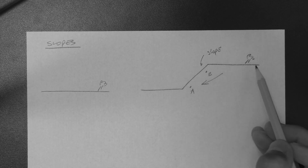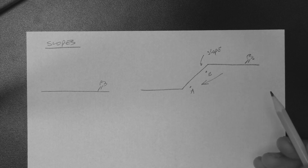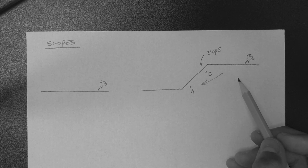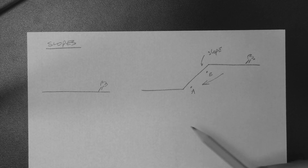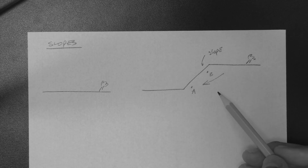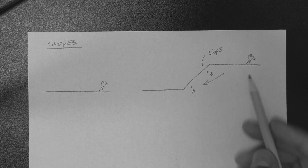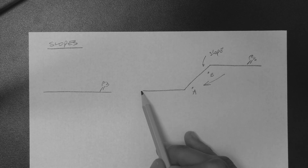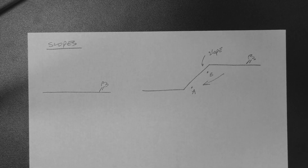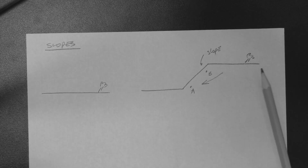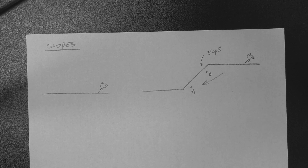So, depending on the geometry of the slope and the properties of the soil — really the engineering properties of the soil — we could be close to having an instability, which is this movement that we do not want, or we could be far from it. For example, if the slope had a lower angle with other conditions remaining constant, we would have less likelihood of an instability.